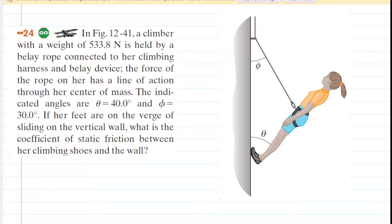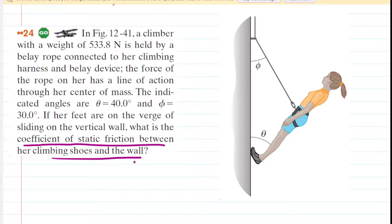If you haven't done so yet, make sure you pause the video and reread the problem before listening on. Ultimately in this question, we have to find the coefficient of static friction between the climbing shoes and the wall. And in order to do that, we're going to need to draw a free body diagram showing forces acting on the climber.